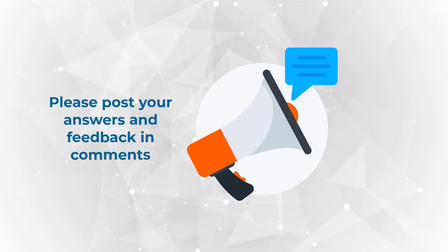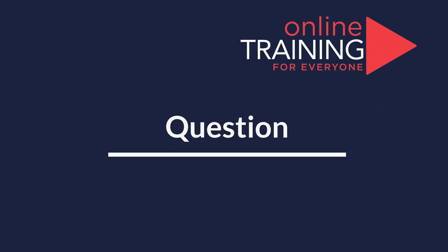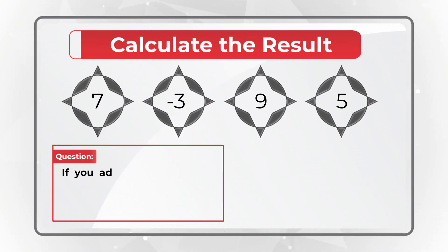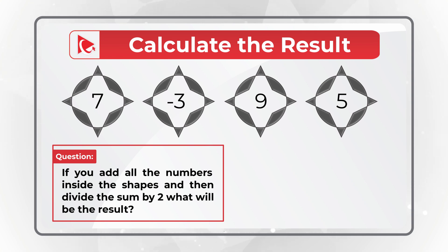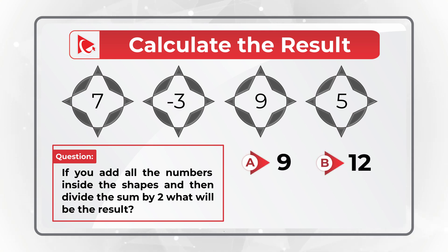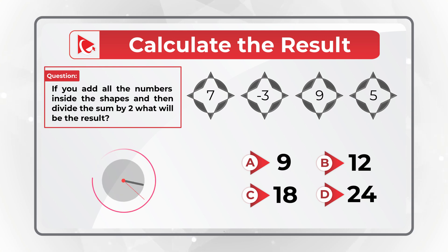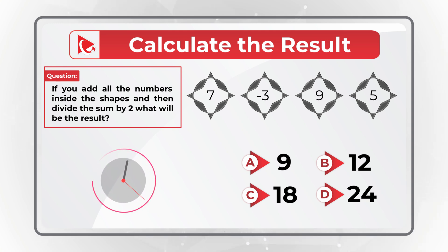Did you come up with the same conclusion? Please share your thoughts in comments. Here's a question for you to test your skills. If you add all the numbers you see in the picture inside the shapes and then divide the sum by 2, what would be the result? Please choose one of four choices — A: 9, B: 12, C: 18, D: 24. Give yourself a little bit of time and once ready, please make sure to post your answer in comments. Thanks for participating and good luck!